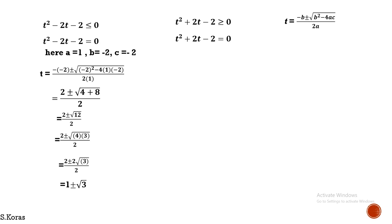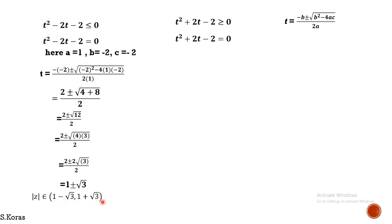So the T values are 1 ± √3. Since the inequality is ≤ 0, the solution for a quadratic inequality less than or equal to zero is the closed interval between the smaller and larger root: T belongs to [1 − √3, 1 + √3].